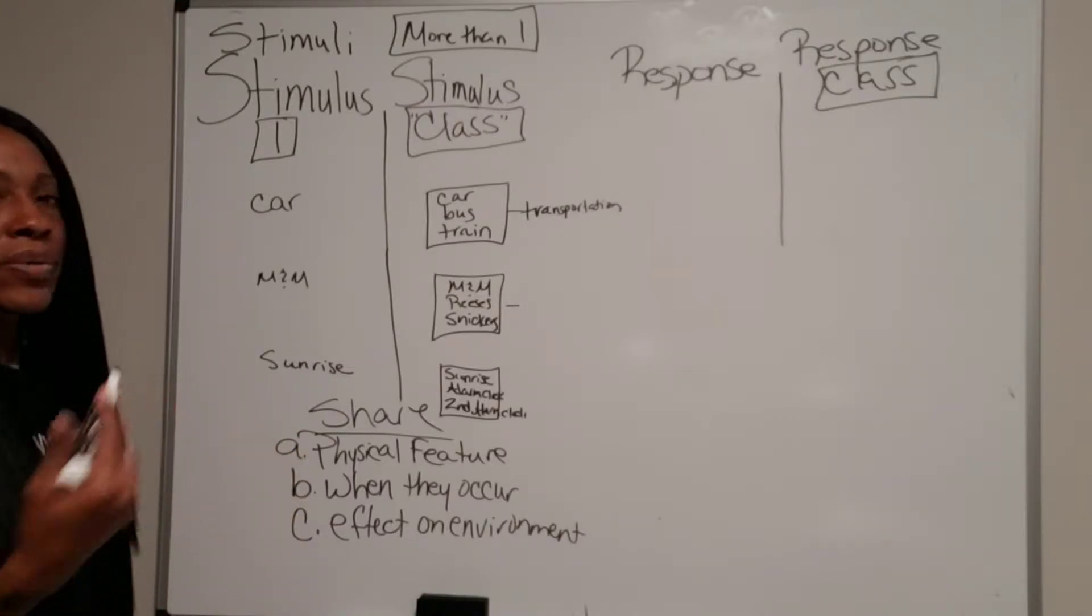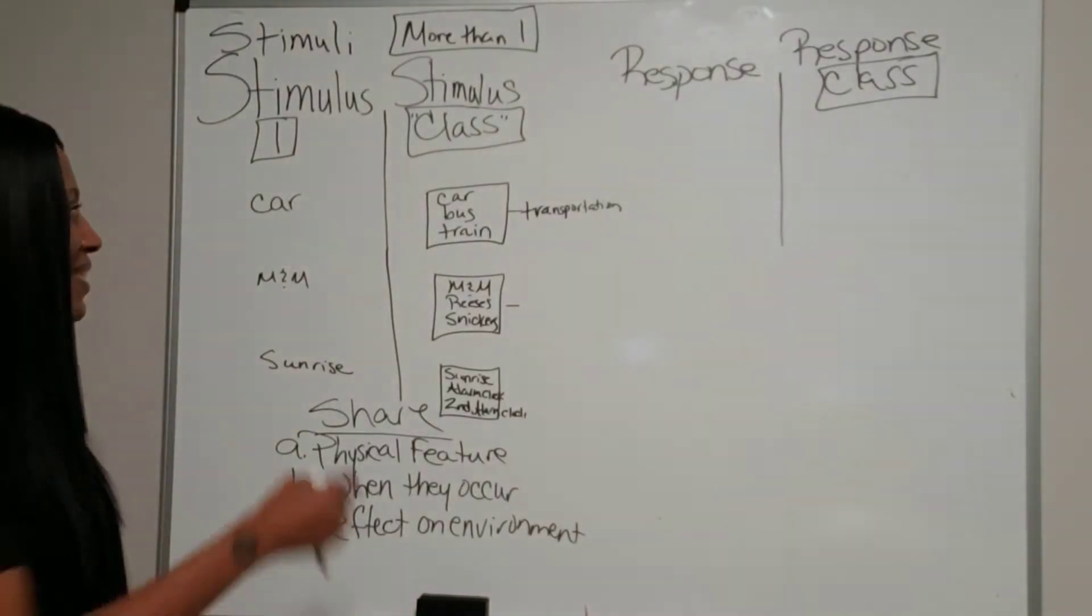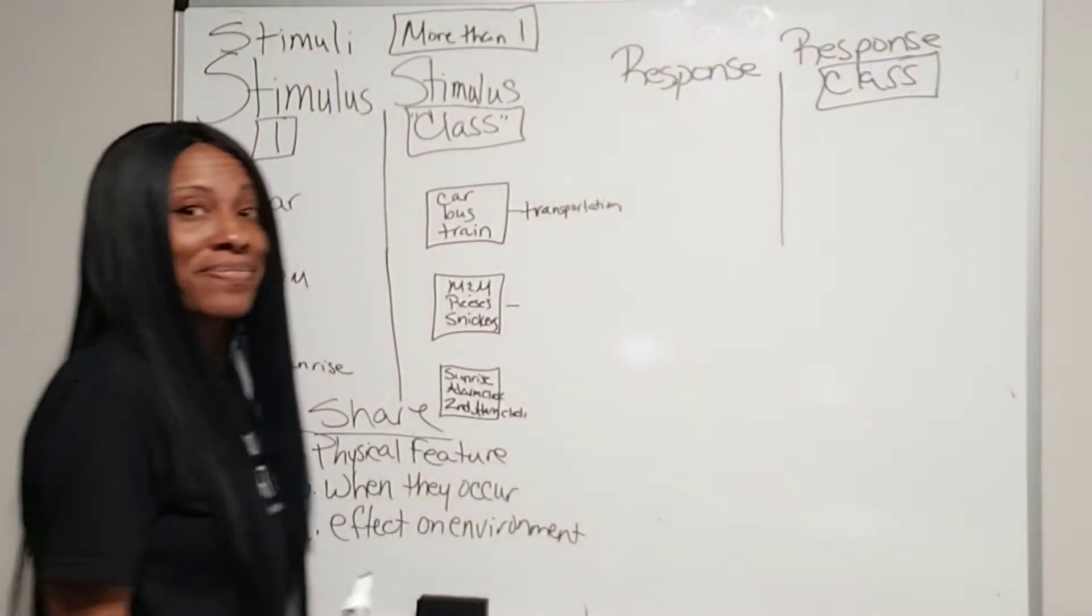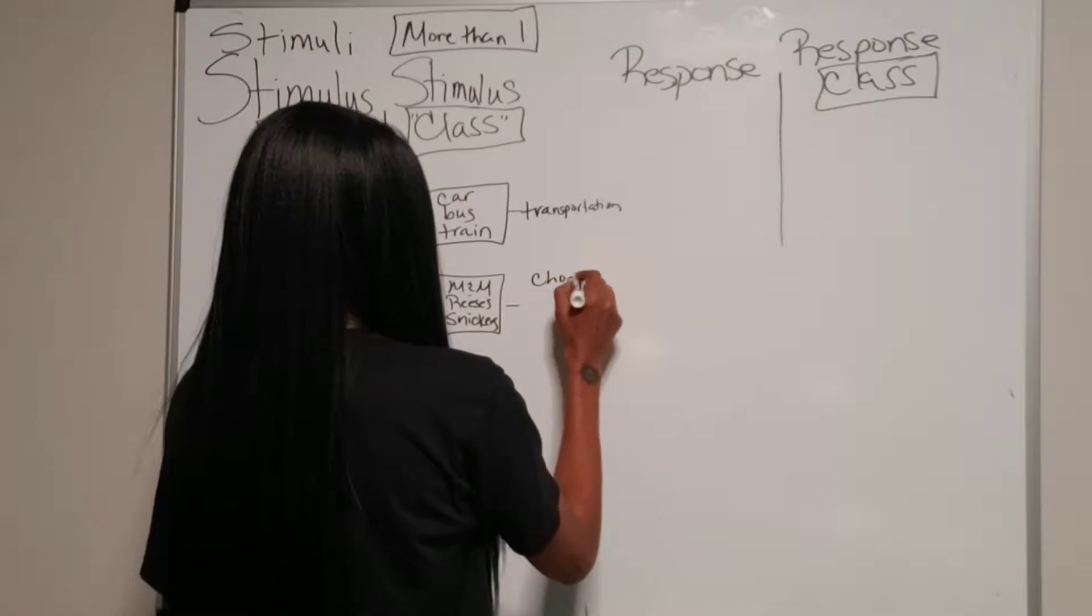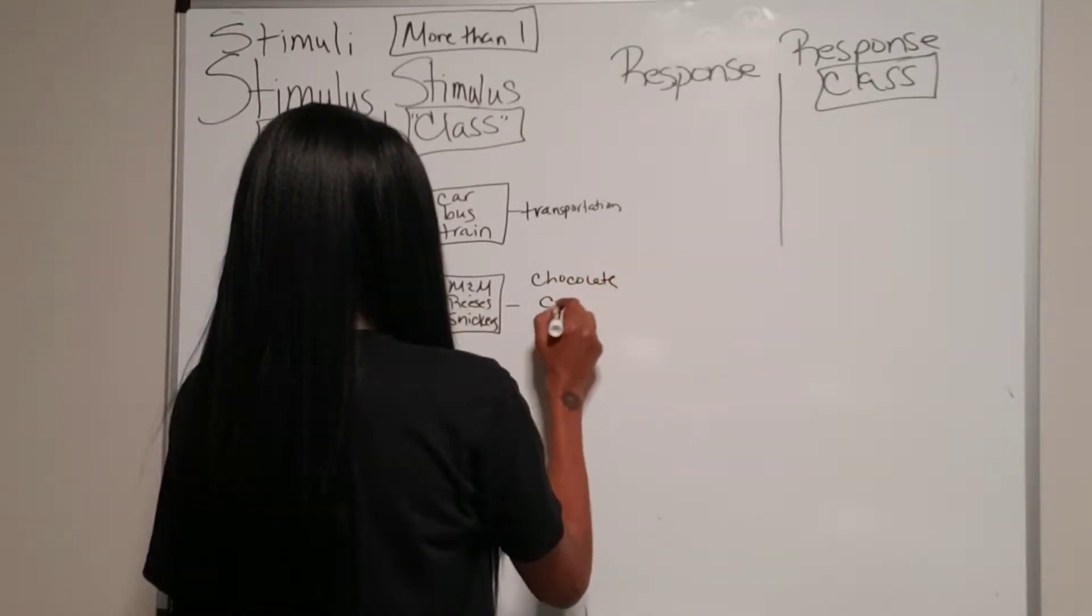M&Ms, Reese's, Snickers. What do they all have in common? They're all chocolate candy. So they share the same physical feature of being chocolate candy.